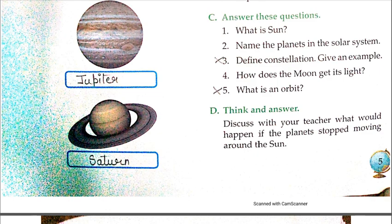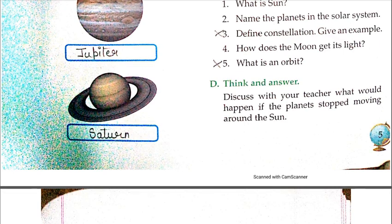Think and discuss with your teacher: what would happen if a planet stopped moving around the sun? When a planet revolves around the sun, it moves closer and farther — when Earth is closest to the sun there is summer, when farther there is winter, and this is how seasons change. This will be discussed further when school is open.